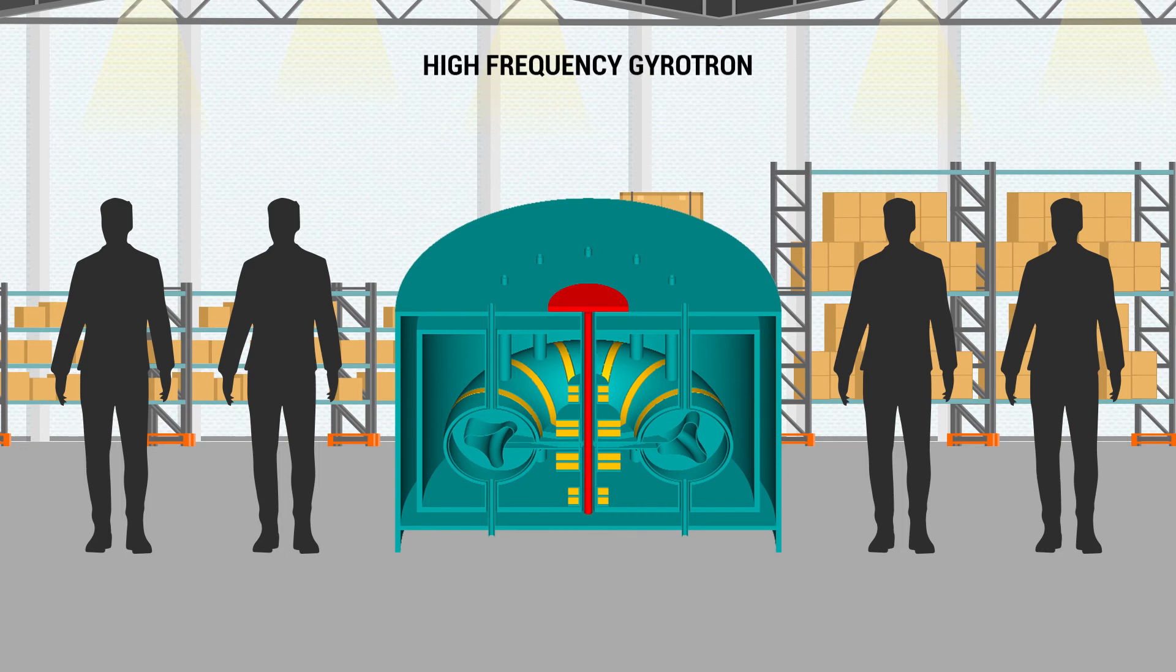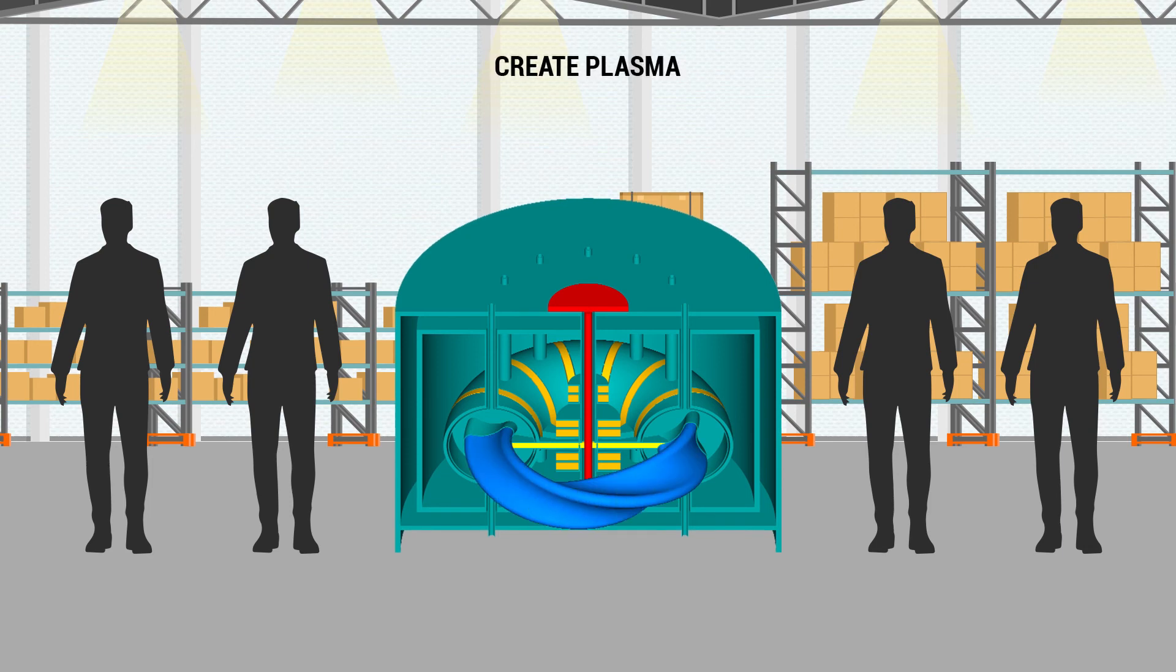The fifth step in the process is to heat the electrons with microwaves. The sixth step is to create a high density, high temperature plasma.